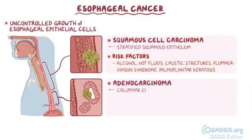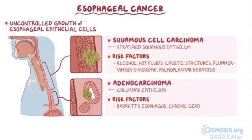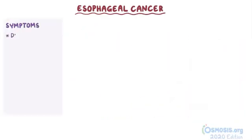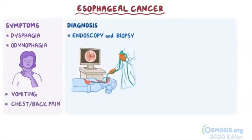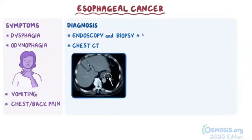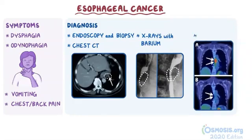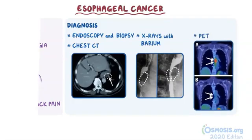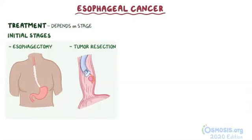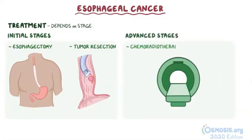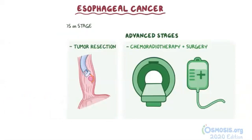Adenocarcinoma arises from columnar epithelium; Barrett's esophagus and chronic GERD are the most important risk factors. Symptoms include dysphagia, odynophagia, vomiting, and chest or back pain. Diagnosis is made with endoscopy and biopsy. Chest CT, x-rays with barium contrast of the upper GI tract, and PET are used for further evaluation. The treatment depends on the stage: for initial stages, esophagectomy and tumor resection are sufficient; for more advanced stages, there's chemoradiotherapy combined with surgery.